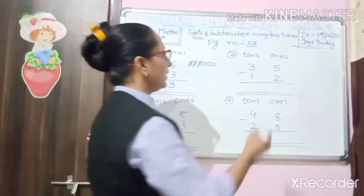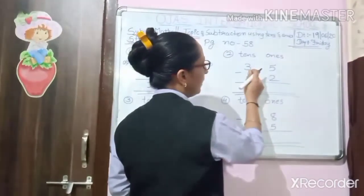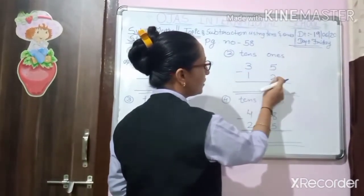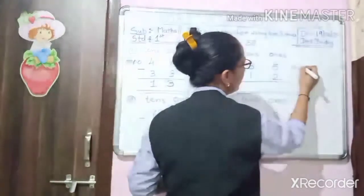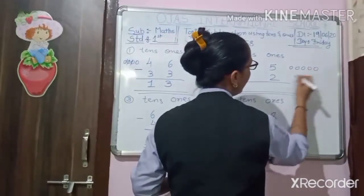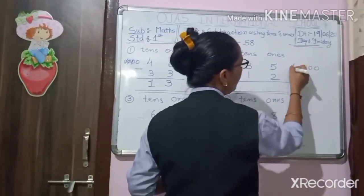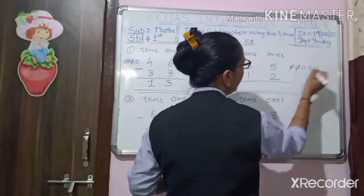Now second one, tens and ones: 35 minus 12. So 1, 2, 3, 4, 5 — cut out 2: 1, 2. Remaining: 3.